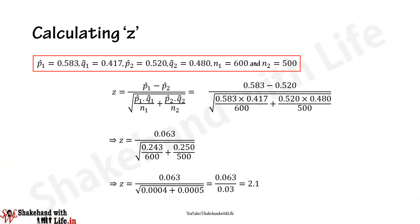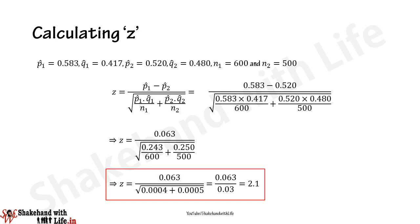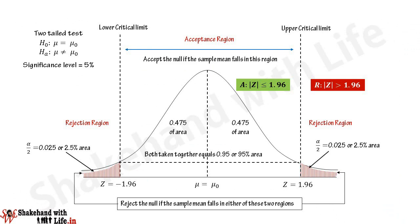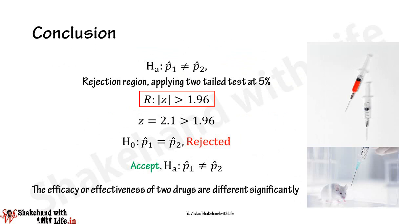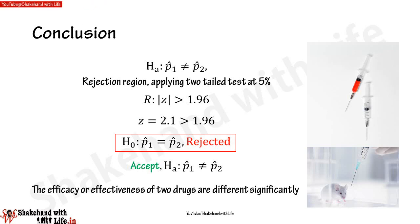Replacing the values of p1-cap, q1-cap, p2-cap, q2-cap, n1, and n2 into the z test statistic equation and performing all calculations, the value of z comes out as 2.1. Since Hₐ is two-sided, we apply the two-tail test at the five percent significance level. The rejection region is defined as: reject when |z| is greater than 1.96. Our calculated z of 2.1 is greater than the critical value of 1.96, so the null hypothesis falls in the rejection region and is rejected.